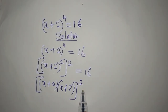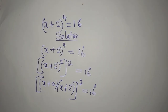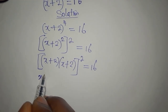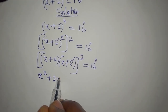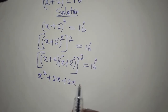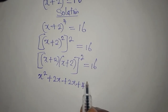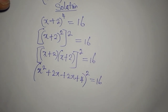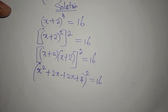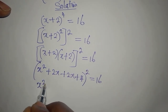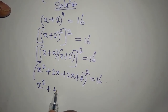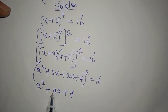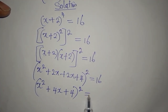Remember, everything is squared and is equal to 16. From here, the expansion gives us: x times x is x squared, x times 2 is plus 2x, 2 times x is plus 2x, and 2 times 2 is 4. So we have x squared plus 4x plus 4, because 2x plus 2x is 4x — and the whole of this is squared and equal to 16.